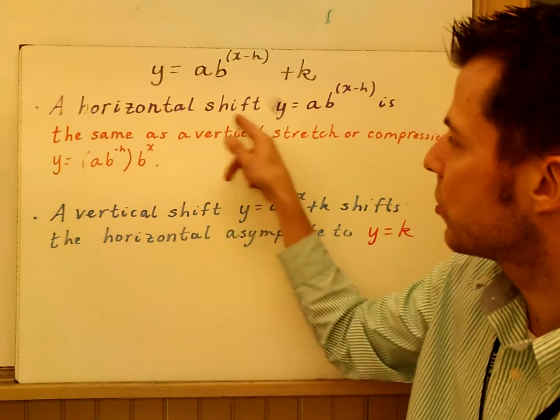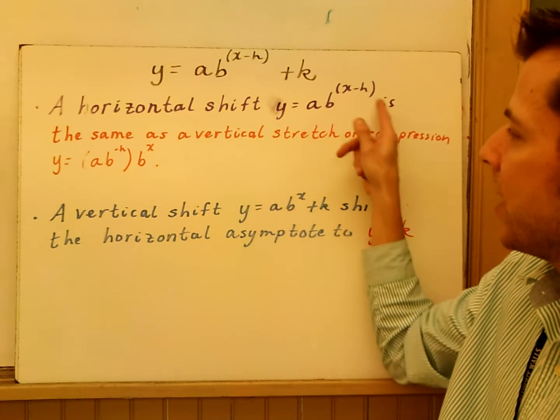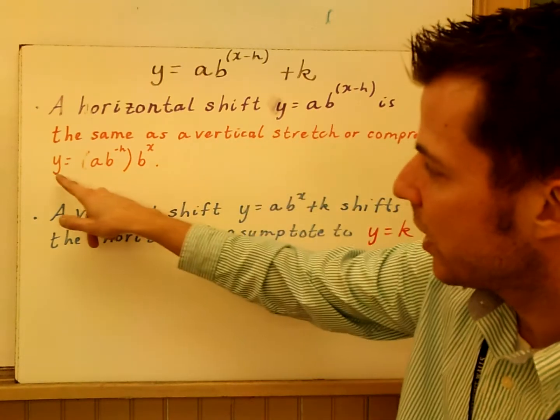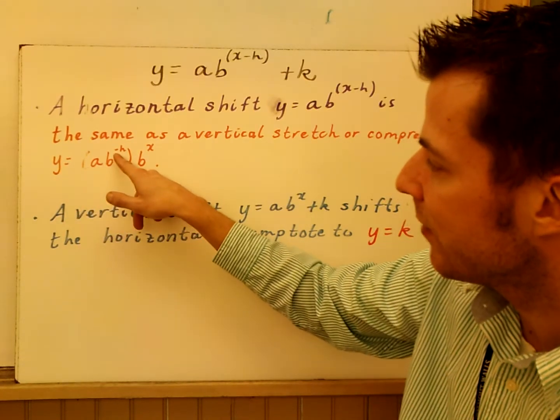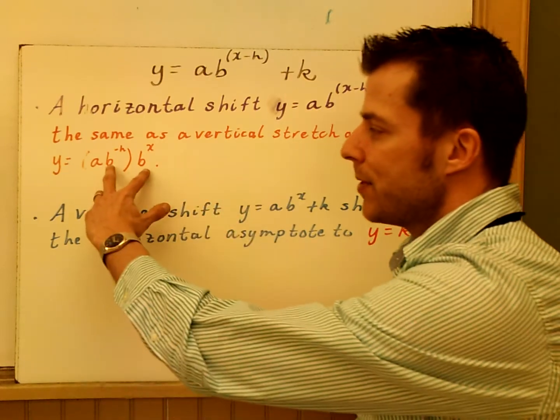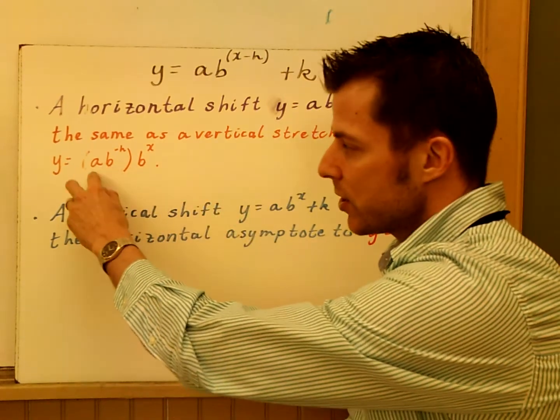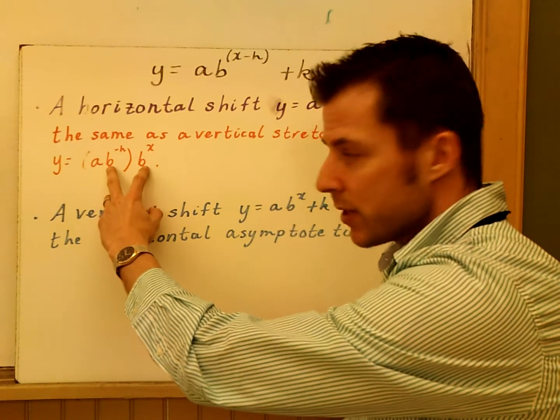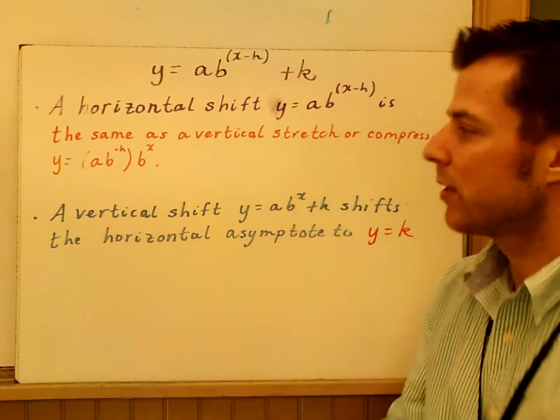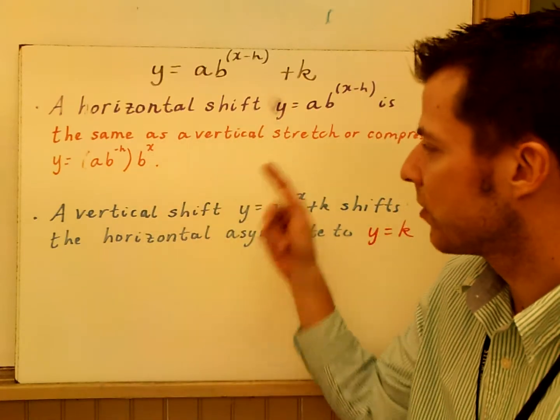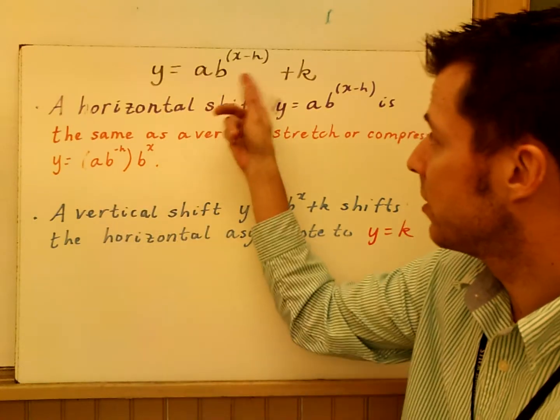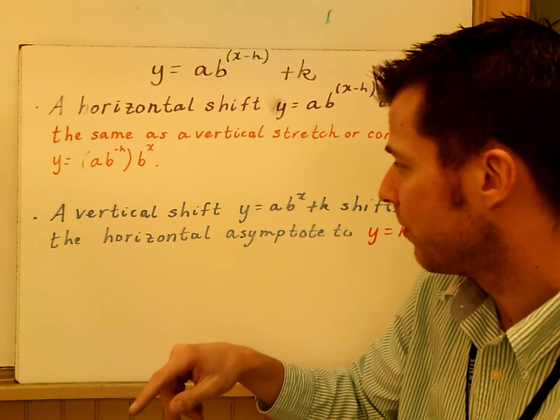Just so you know, a horizontal shift, Y equals AB to the X minus H, is also the same as a vertical stretch or compression. They rewrote the equation as Y equals AB to the negative H times B to the X there. What happens here is you just add those two when you distribute. This is multiplication. When you multiply two numbers with the same base, you add them together so you get X minus H. So they just actually reworked this equation and the horizontal shift is the same as a vertical stretch. I don't really apply this, but I wanted to let you know. I still think of my shifts, I don't switch it up very much.